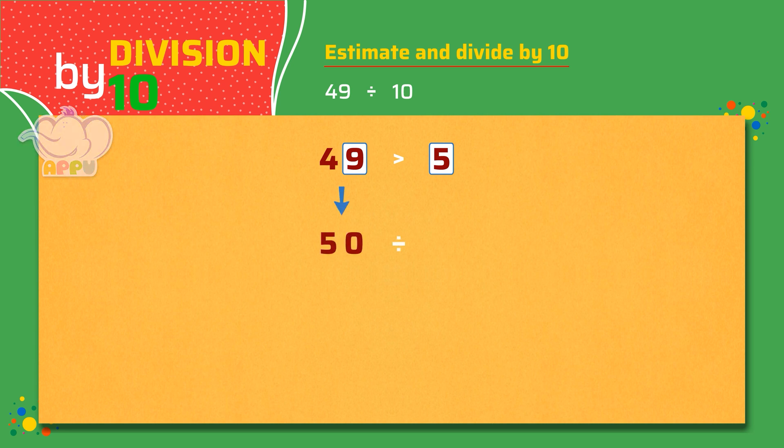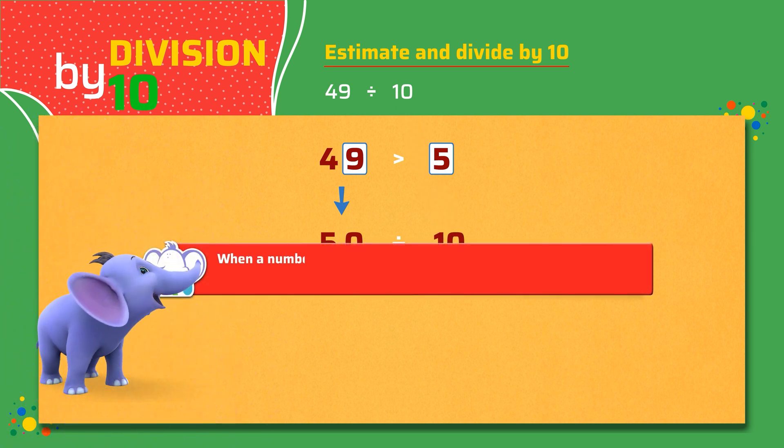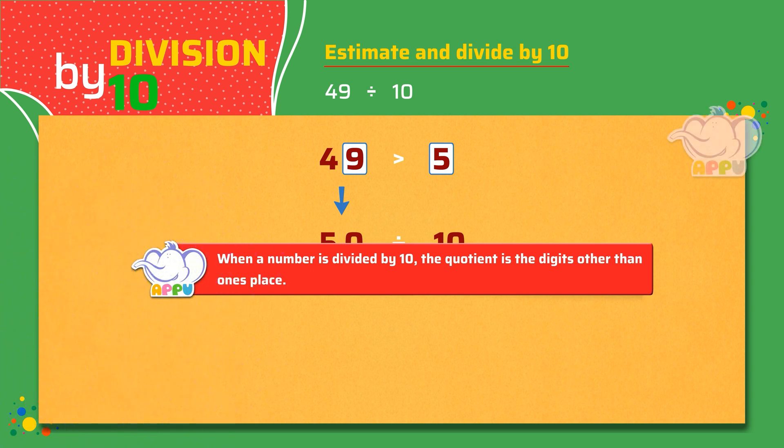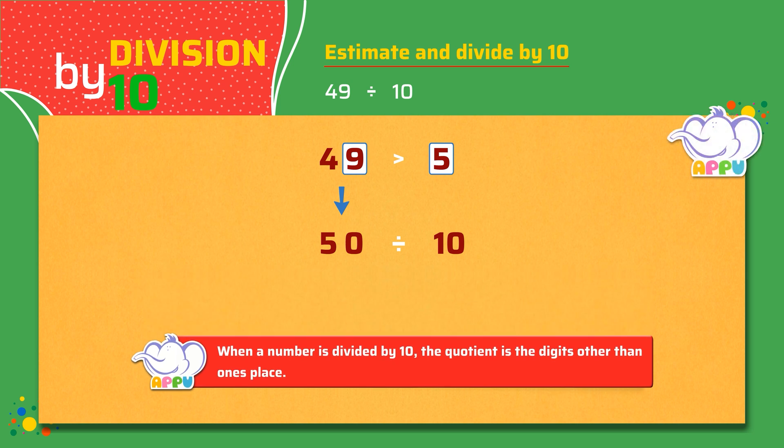So we divide 50 by 10. When a number is divided by 10, the quotient is the digits other than the ones place. Numbers other than ones place is 5. So the estimated quotient is 5.